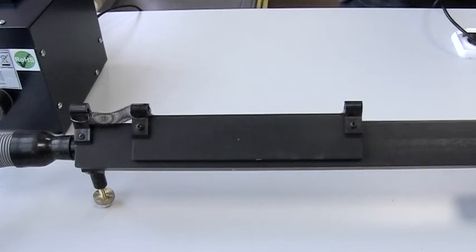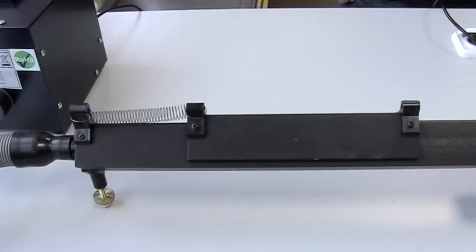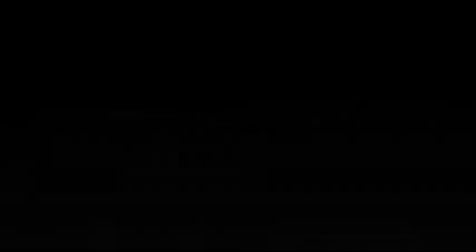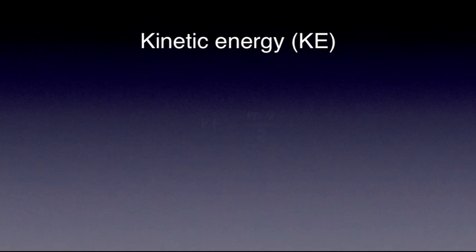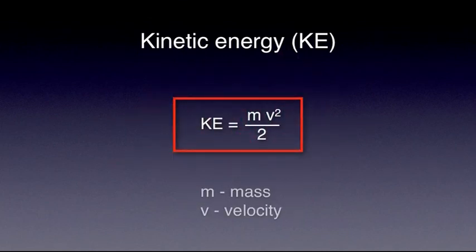In the case of a harmonic oscillator, there are two relevant forms of energy that we need to take into account. The first one is kinetic energy, which can be associated with any object in motion. Kinetic energy is defined as mv squared over 2, where m is the mass of the object in motion and v is its speed or velocity.